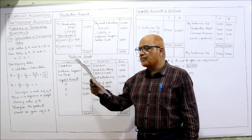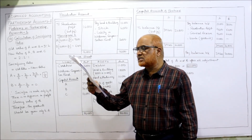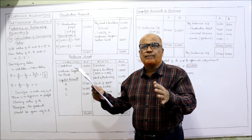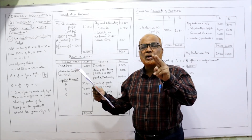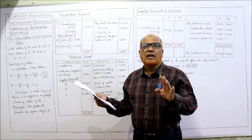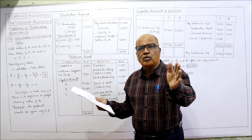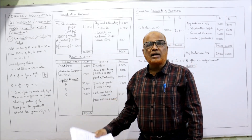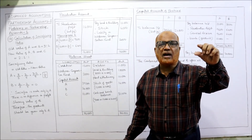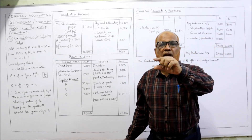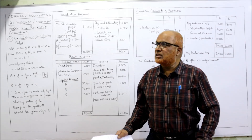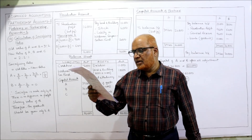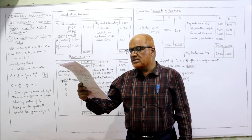The liability of workmen compensation fund is determined at 2,000. The workmen compensation fund in the balance sheet is 4,000, but only 2,000 is the actual liability. The remaining 2,000 we have to remove — that is a gain. Entry: workmen compensation fund account debit 2,000, revaluation account credit 2,000. This transfers the excess workmen compensation fund of 2,000.